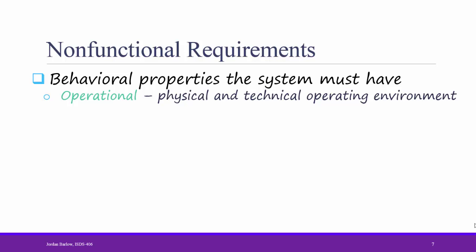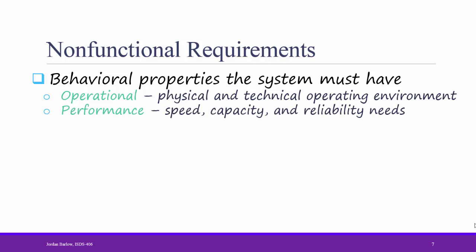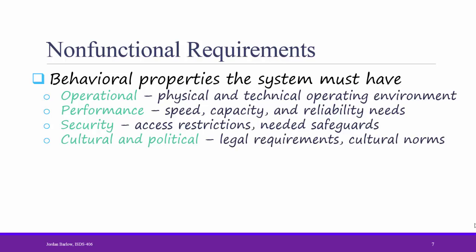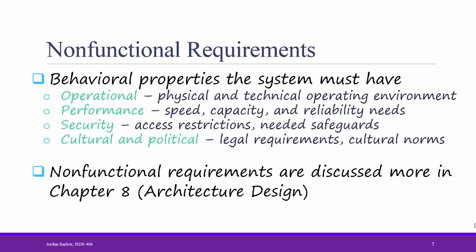The second type of non-functional requirement is performance — speed, capacity, reliability, and so forth. For example, we want student assignments to be able to upload in no more than 10 seconds. The third type of non-functional requirement is security, including access restrictions and needed safeguards. For example, you have to log in with your Cal State Fullerton username and password in order to access Titanium. The last one is cultural and political, which has to do with legal requirements or cultural norms. This could include languages that the system must operate in or legal requirements with which you must conform. For example, the Titanium system must comply with legal requirements about student privacy. We'll talk more about non-functional requirements when we get to the design phase, especially Chapter 8.